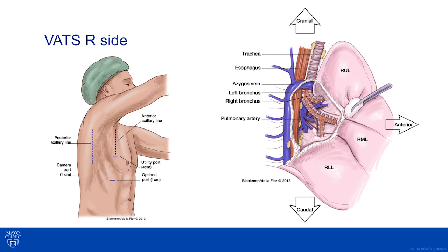The patient had a VATS right upper lobectomy with two ports in the anterior axillary line and one port in the posterior axillary line. The surgery begins with the posterior mediastinal dissection. Taking the lymph nodes at this time allows visualization of the posterior mediastinum as well as clearing the pleural surface for dissection of lymph nodes between the right upper lobe bronchial takeoff and the pulmonary artery, as well as inferior to the azygous vein.